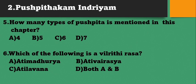Pushpidhika Indriyam: How many types of Pushpida are mentioned in this chapter? Options: 4, 5, 6, 7. Four types of Pushpida are mentioned: many fragrant smell (one type), Sugandha and Durgandha mixed type of smell, many varieties of Durgandha, and Durgandha still present when Snigdha Lepa is applied. That is the 4th type.